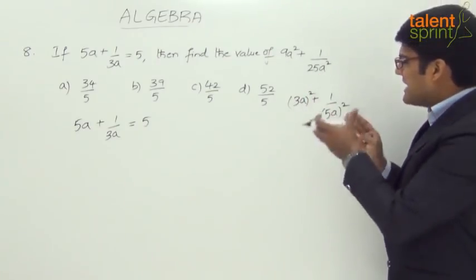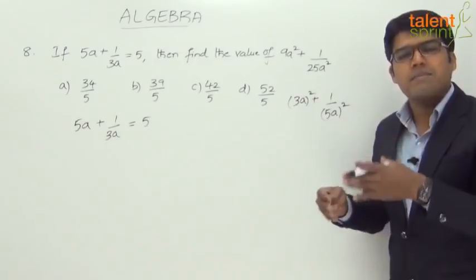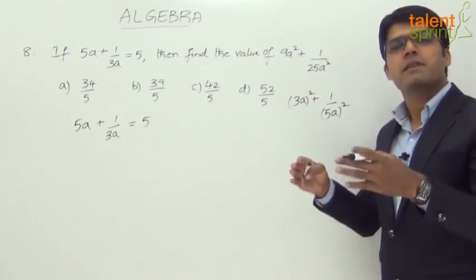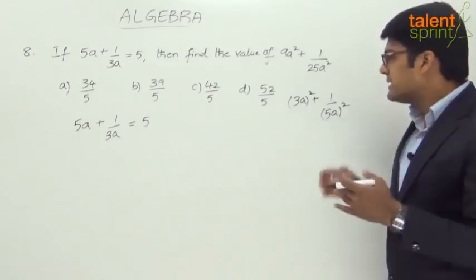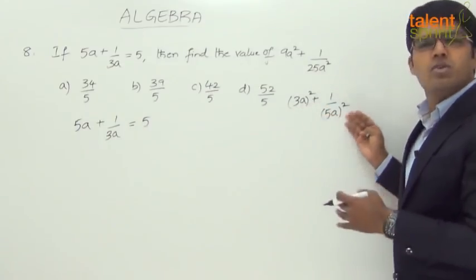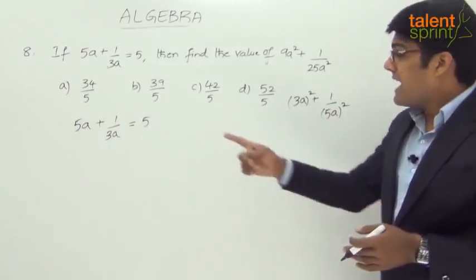3a square is 9a square, 5a square is 25a square. So we need something in the form of 3a plus 1 by 5a. If you have 3a plus 1 by 5a, we can apply 3a plus 1 by 5a whole square, a plus b the whole square expression. So we will get 3a square plus 1 by 5a square plus 2ab part.